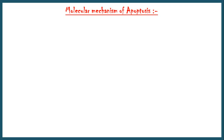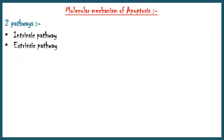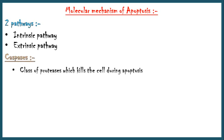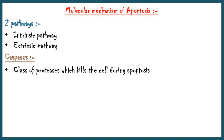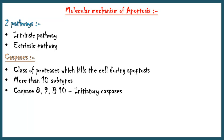Now let's discuss the molecular mechanism of apoptosis. There are two major pathways: the intrinsic pathway and the extrinsic pathway. Caspases are a class of proteases which kill the cell by breakdown of essential proteins during apoptosis. More than 10 subtypes of caspases have been identified. Some of them, like caspase-8, 9, and 10, are involved in initiation of apoptosis. And some of them, like caspase-3, 6, and 7, are involved in execution of the death order by destroying essential proteins within the cell.